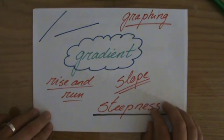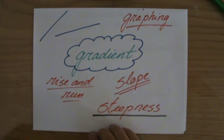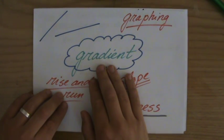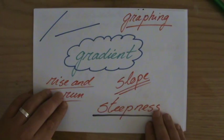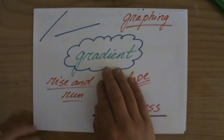So we've spoken about the gradient of a line, or the slope, the rise and run, and we realized that the gradient says something about the steepness of a line, and that is important. So we are graphing, and the gradient is the steepness.